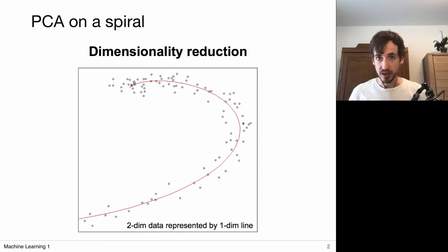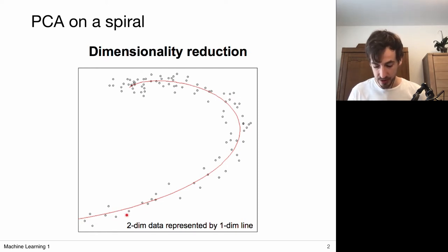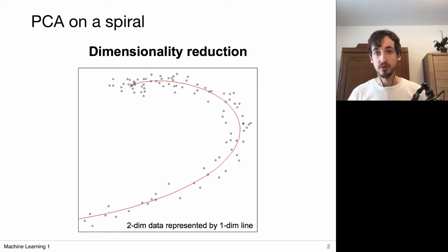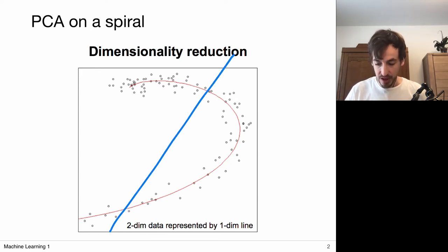So why do we want to consider non-linear methods? Well, of course simply because they are more powerful. For example, consider this example: we have a distribution of data points that seems to be clearly concentrated around a one-dimensional structure. So if we want to reduce our data points to a single number, we want to essentially project it onto the line indicated in red.